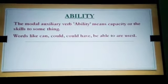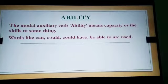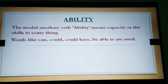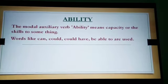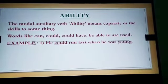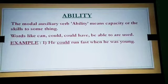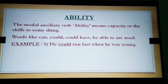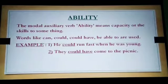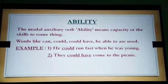The first type is ability. Ability means the capacity or skill to do something. Words like can, could, could have, and be able to are used. For example: 'He could run fast when he was young' — here 'could' is the ability modal auxiliary verb. 'They could have come to the picnic' — here 'could have' is the ability modal auxiliary verb. Note that 'run' and 'come' are V1 forms.